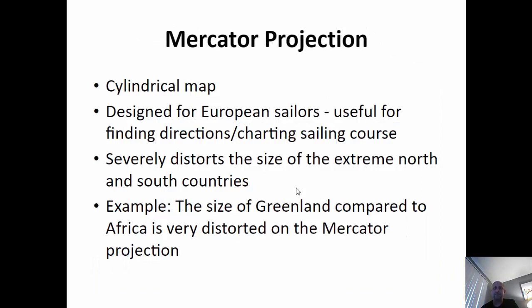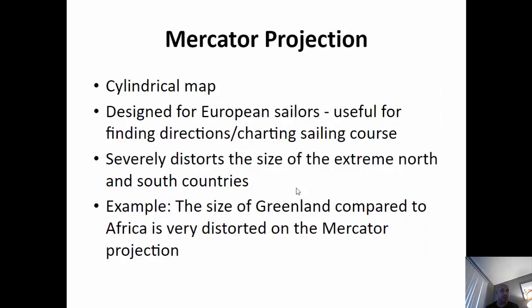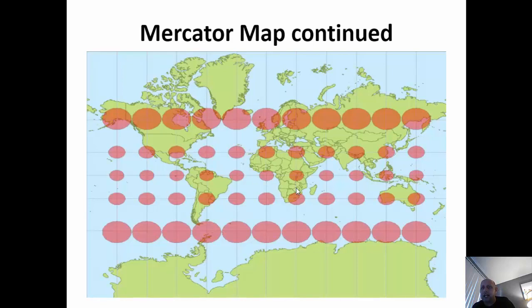The Mercator map is a cylindrical map — you can roll it up into a cylinder. It was designed for sailors, but there is incredible distortion — another word for error — the further south and north you go, and at the furthest extremes on the east and west. When looking at Mercator, focus on comparisons like Greenland and Africa, or Alaska, which is stretched out and looks much larger than it is because it's towards the western edge. There's a lot of pull and stretch towards the outer edges.